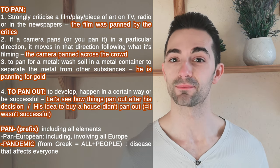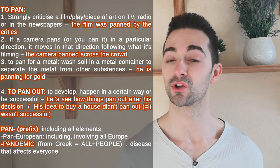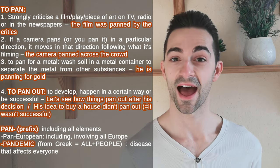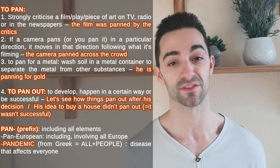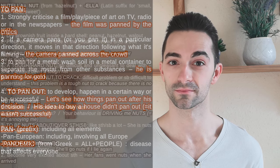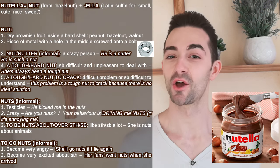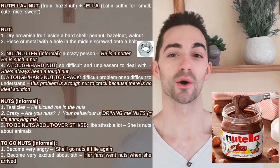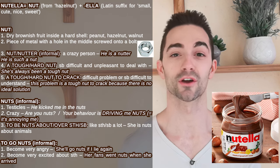Pan as a prefix means including everyone, including all elements. So pan-European means including the whole of Europe. And funnily enough, pandemic means something — in this case a disease — that affects everyone all around the world. A great combination with pancakes is Nutella, which stems from the English word 'nut' from hazelnut, and 'ella', which is the Latin prefix that means sweet, small, cute.